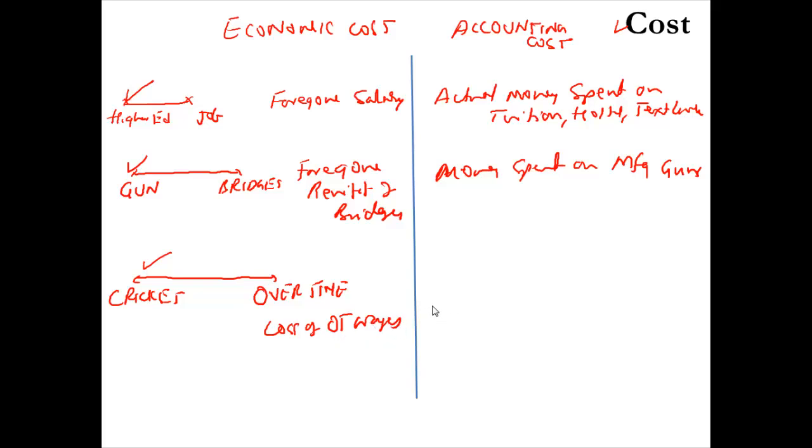According to accounting cost, it is the money spent on ticket to gain entry into the cricket match. If a person watches cricket at home on the TV, then his accounting cost is equal to zero. But still, his economic cost is not equal to zero. He still loses his wages.